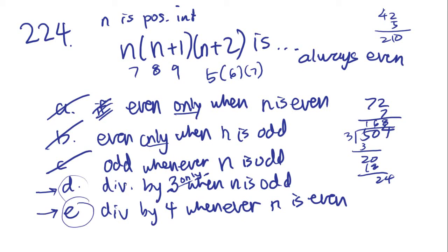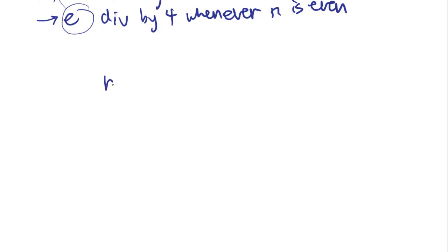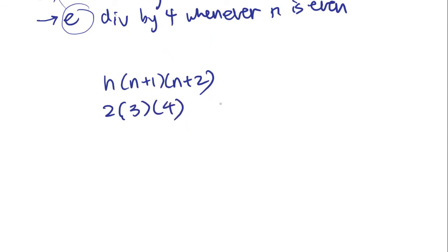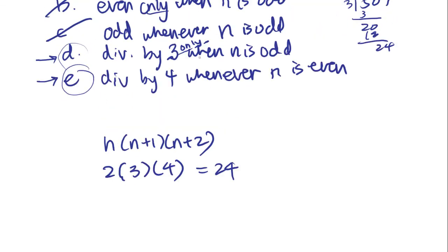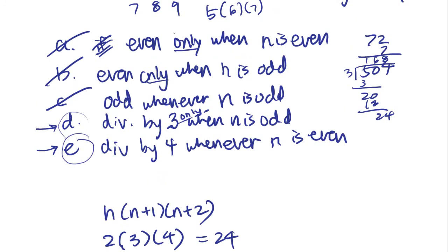Is the product divisible by 3 only when N is odd? Let's test an even number. If N is 2, we get 2 times 3 times 4, which is 24 — and that's definitely divisible by 3. So D's claim that it's divisible by 3 only when N is odd is not correct. That leaves us with only E.